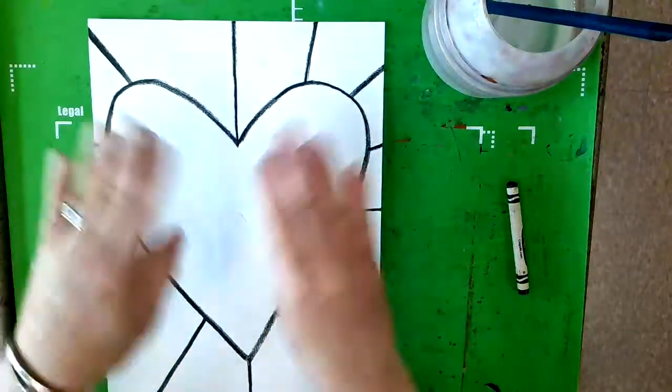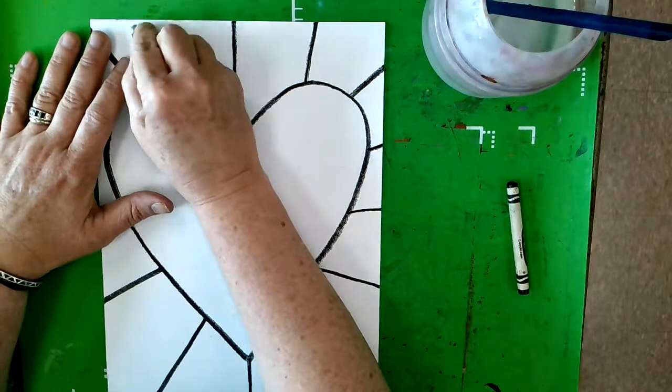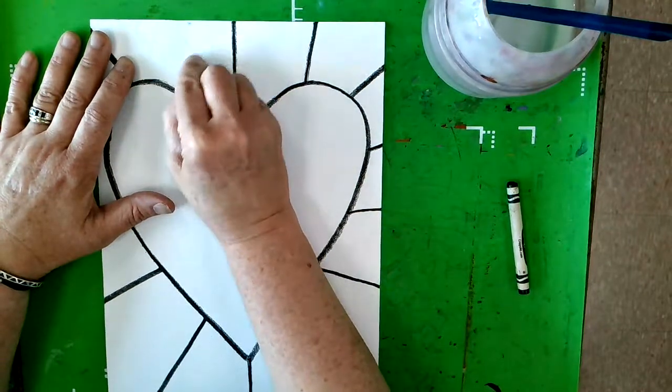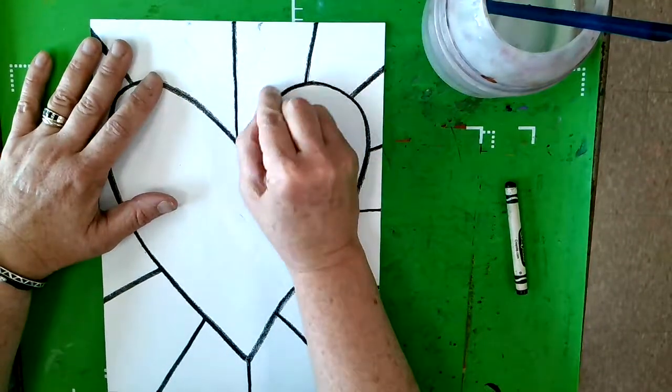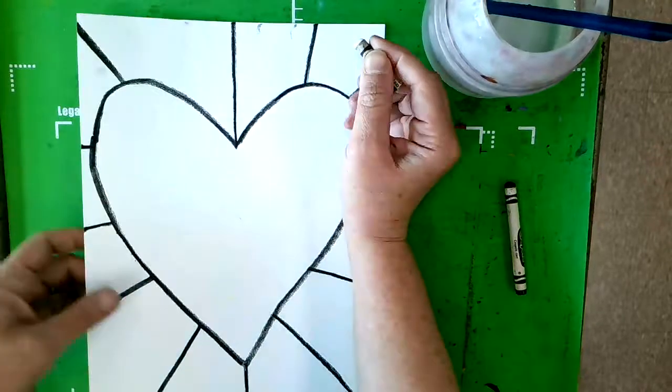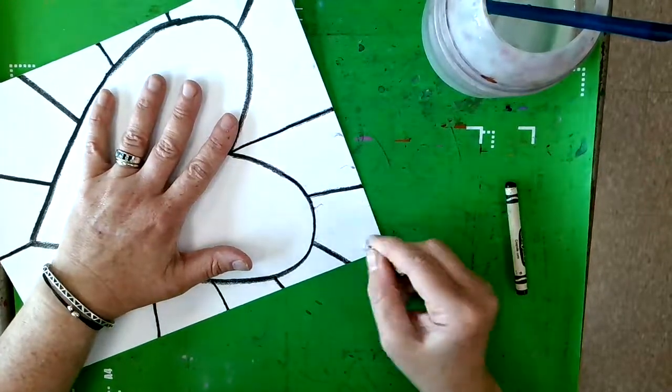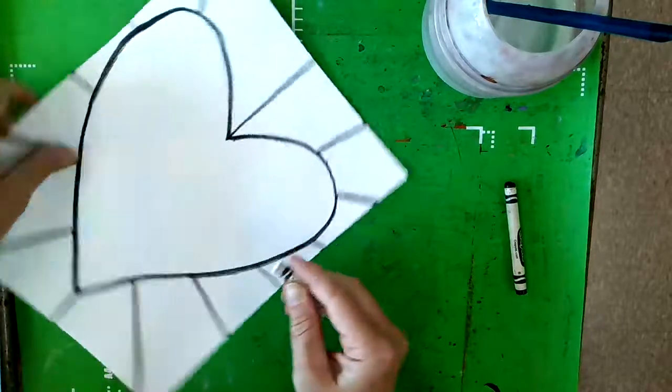But if you look at it like this, you don't even know it's there. You could add some other things in these sections too. I'm just going to draw some wavy lines in between the black lines, just for some added detail. All the way around.